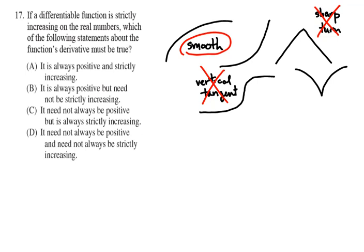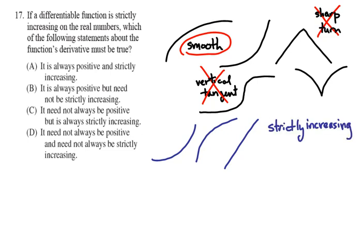The second thing we have to understand is that the function is strictly increasing. A curve that is strictly increasing is always going up — it never goes down, never levels off. The first blue curve I've drawn is strictly increasing, and the second one, a different type, is also strictly increasing. It could even just be a straight line that is always going up — strictly increasing. So we have a differentiable function that is strictly increasing on the real numbers.